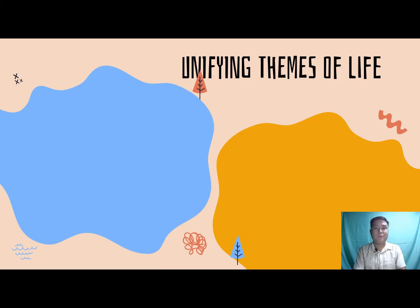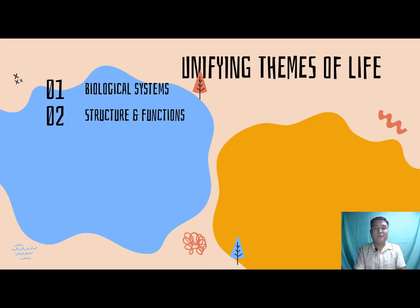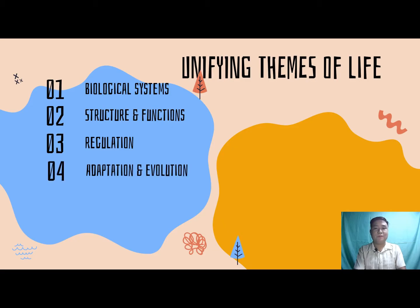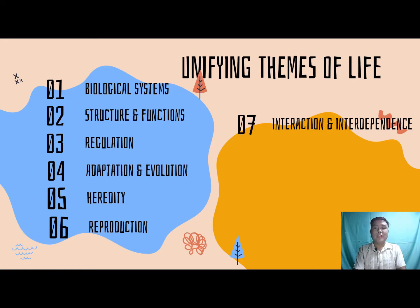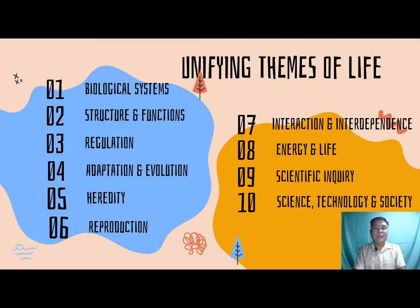The unifying themes connect the different sub-disciplines that make biology as a science. The living organisms differ from non-living organisms in various aspects. The shared properties of living organisms include: biological systems, structure and functions, regulation, adaptation and evolution, heredity, reproduction, interaction and interdependence, energy and life, scientific inquiry, and science, technology, and society.